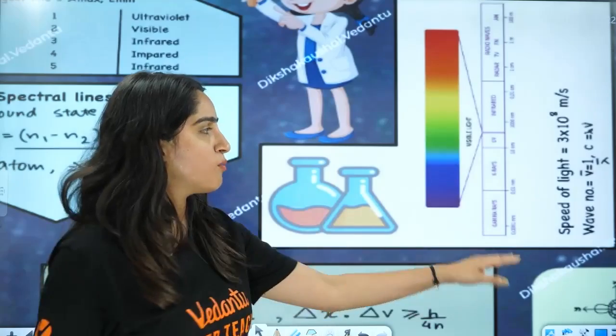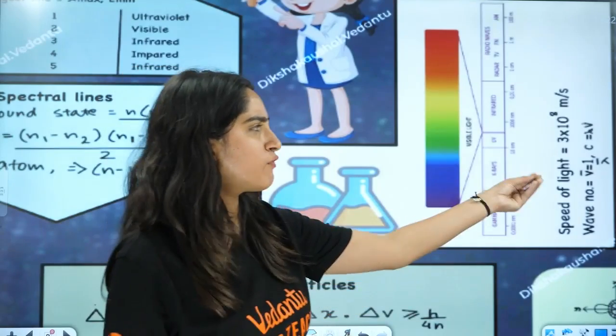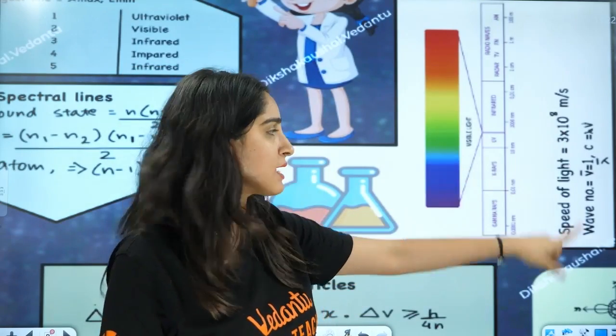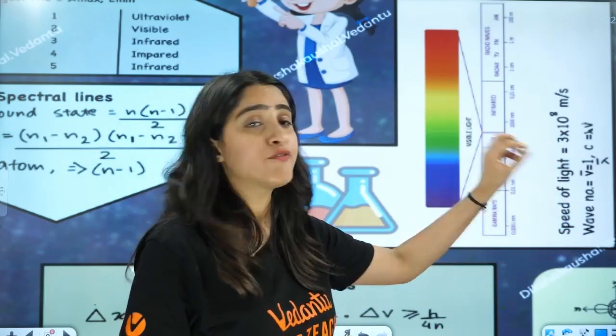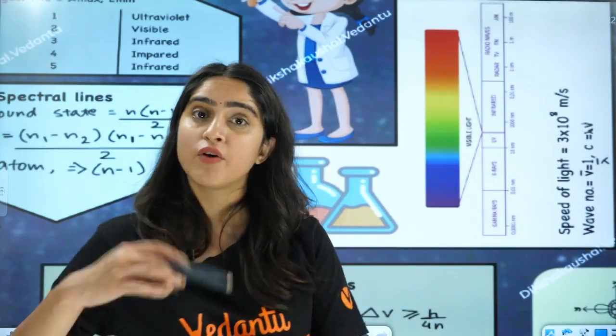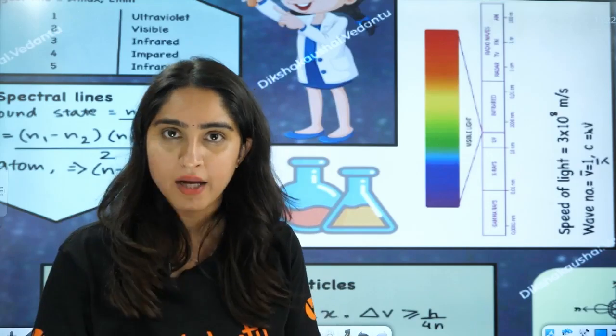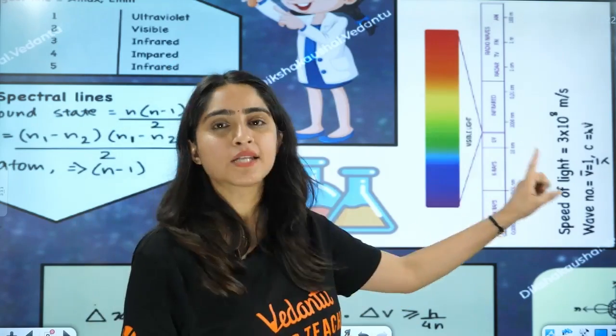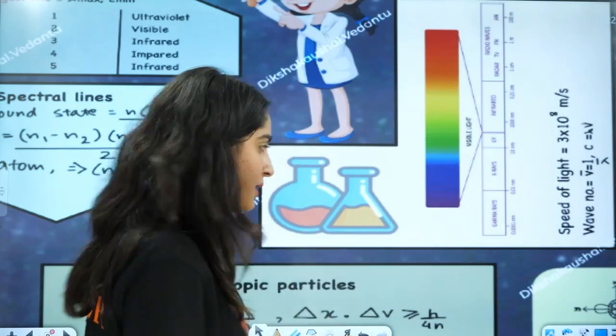The formula: speed of light is 3 × 10⁸ meters per second, wave number is the inverse of lambda (inverse of wavelength), and C equals nu times lambda.